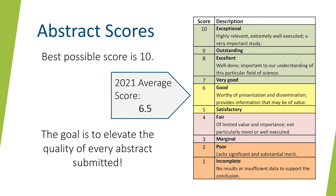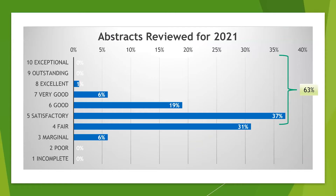ASN has been collecting abstract scores since 2013. The rating scale goes from 1 to 10, with 10 being the highest. Last year, the average score for abstracts was 6.5. Over time, we aim to elevate the quality of every abstract submitted to ASN events. In 2021, for example, 63% of abstracts received ratings from satisfactory to exceptional.